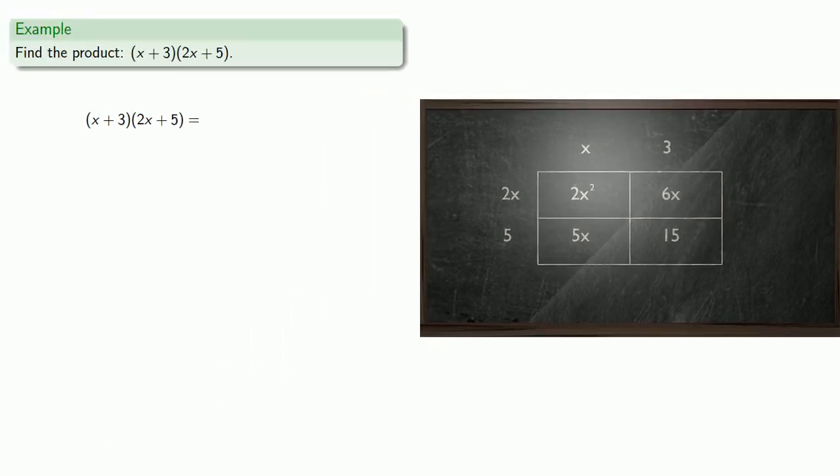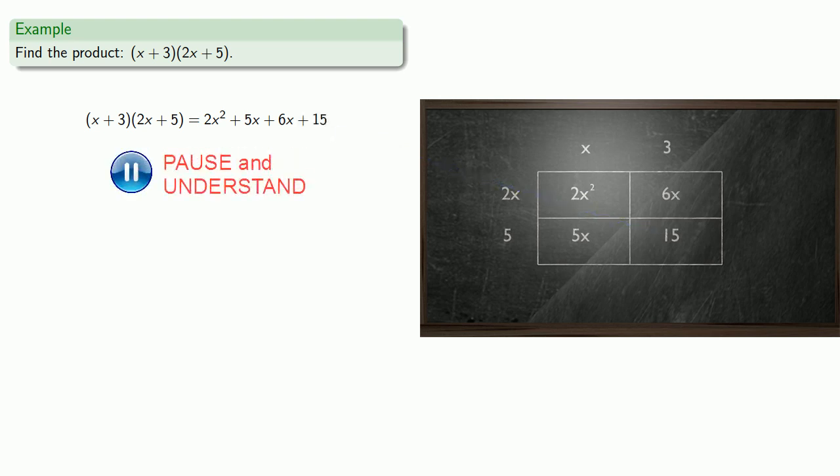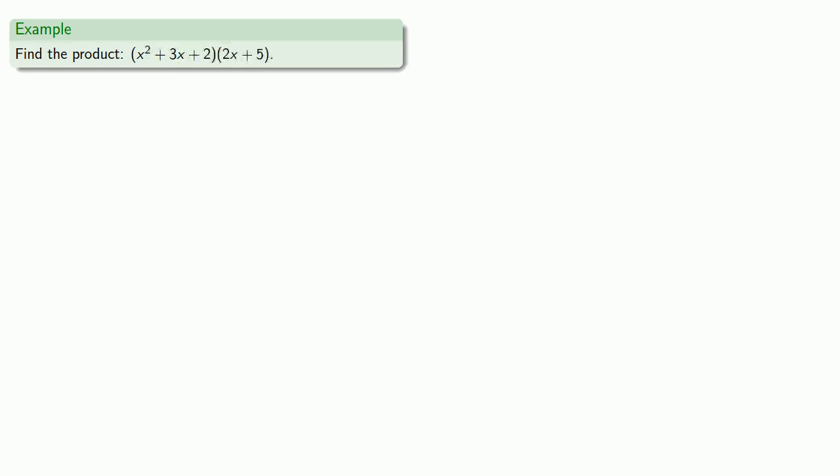So our product will be 2x squared plus 5x plus 6x plus 15. And we have some like terms we can combine, which will give us the product x plus 3 times 2x plus 5. The important thing to remember is to break each side into as many parts as there are terms in the factor.